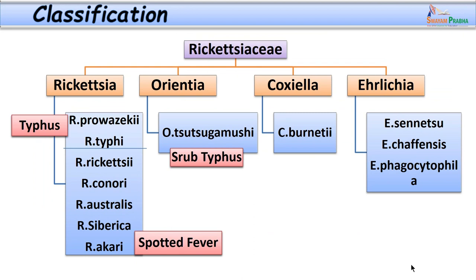The Rickettsiae family is further divided into Rickettsia, Orientia, Coxiella and Ehrlichia. Some researchers do not consider Coxiella in this family because it does not require a vector for transmission. The Rickettsia group includes 17 species; the most medically important ones causing spotted fever are Rickettsia rickettsii, R. conorii, R. australis, R. siberica and R. akari. Those causing typhus fever are Rickettsia prowazekii and Rickettsia typhi. A single medically important species in Orientia is Orientia tsutsugamushi, which causes scrub typhus.